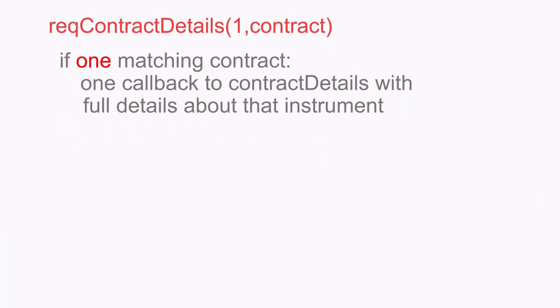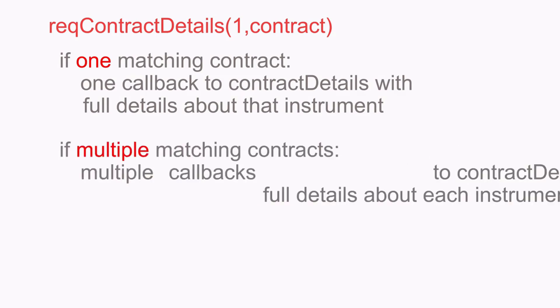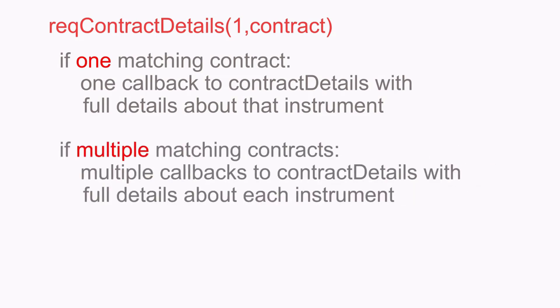From a single REQContractDetails request, if there is one matching contract, full details about that contract will be returned, such as the primary exchange, instrument name, valid order types, and trading hours. If there are multiple matching contracts — for instance, different options which have the same underlying symbol and expiry date but different strike prices — there will be separate individual callbacks to contractDetails with details for each option contract.